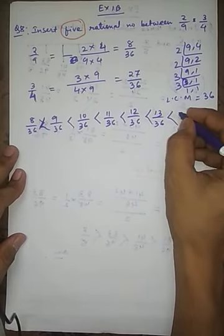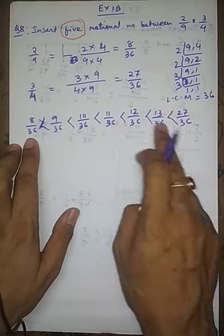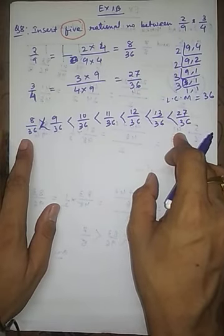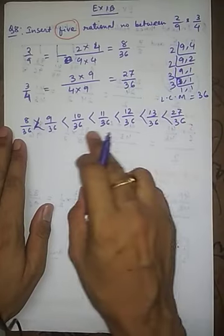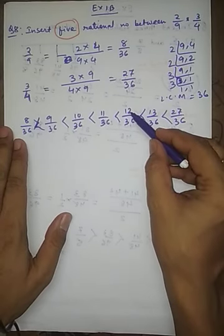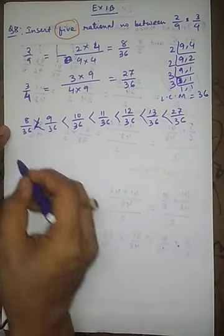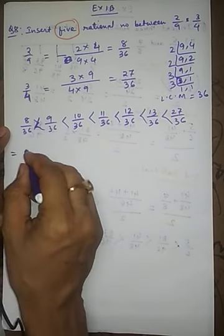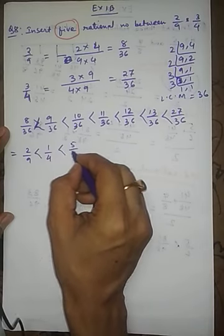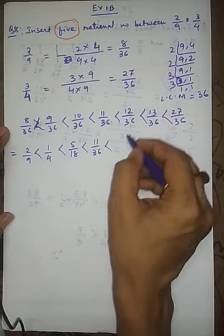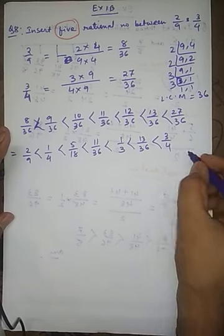However, this is not the final answer. A rational number should have no common factor between numerator and denominator, so we simplify each to its lowest term. 8 by 36 simplifies to 2 by 9. 9 by 36 simplifies to 1 by 4. 10 by 36 simplifies to 5 by 18. 11 by 36 remains as is. 12 by 36 simplifies to 1 by 3. 13 by 36 remains as is. And 27 by 36 simplifies to 3 by 4. This is our final answer.